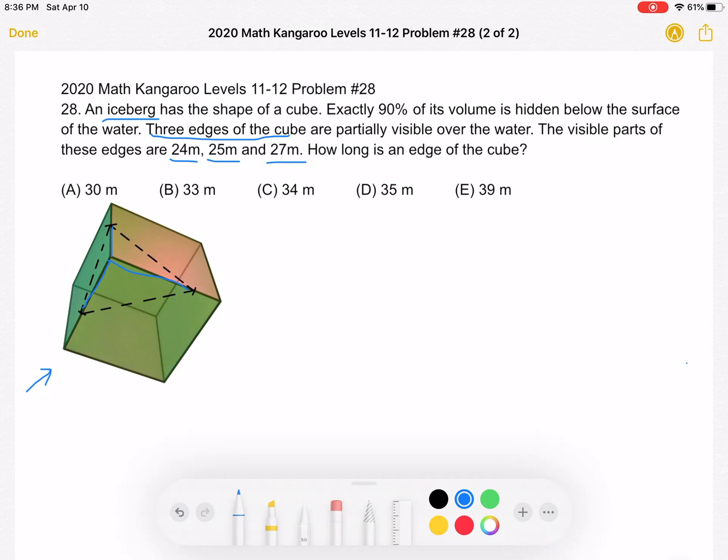So the way we're going to do this is to start with finding the volume of the cube that is visible, so above the surface of the water, which we know is 10% of the total volume of the cube. So if we find the volume that is visible, we can multiply that by 10 to find the total volume of the cube, and then take the cube root of that to find the edge of the cube.